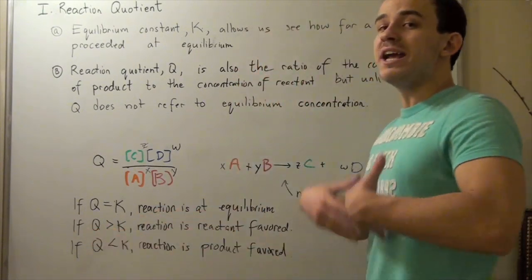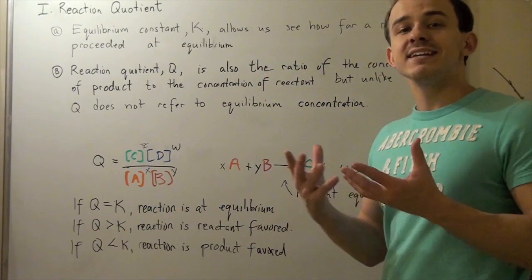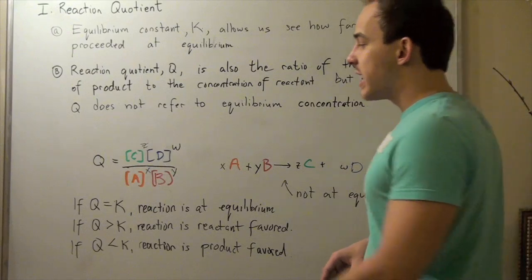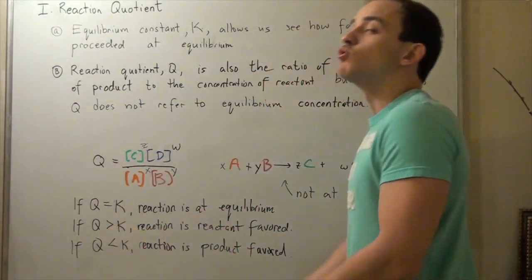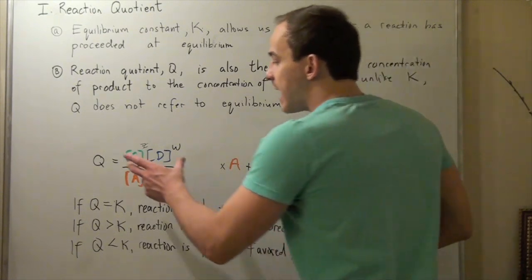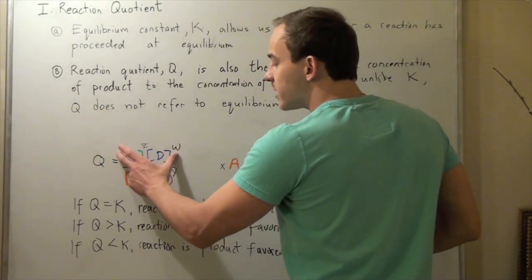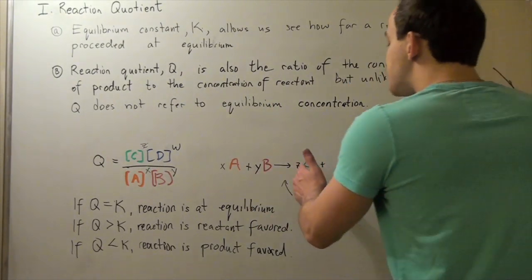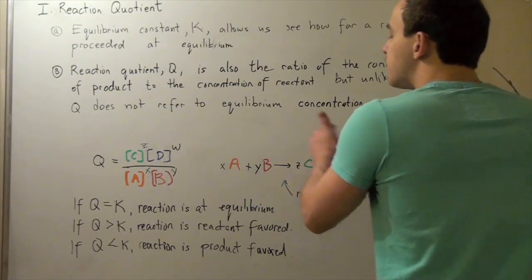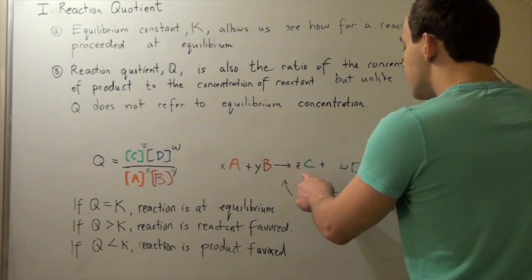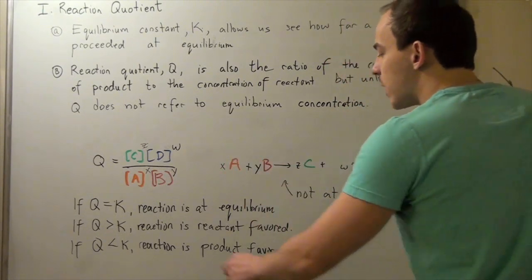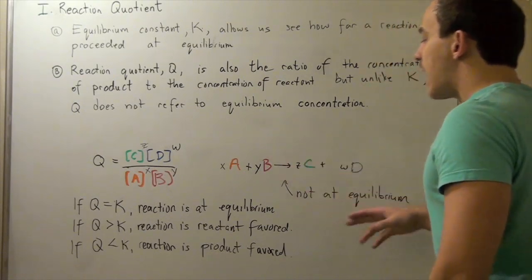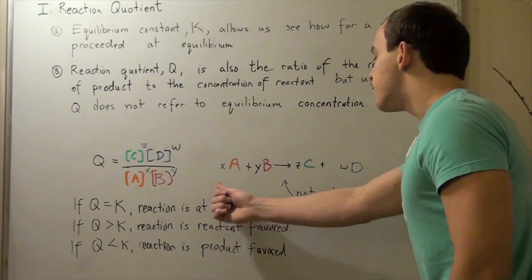Now, if Q is greater than K at the beginning of our reaction, that means our reaction is reactant favored. And that's because, let's look at the ratio. If Q is greater than K, that means the concentration of our products C and D is greater than that at equilibrium. And that means our equilibrium will shift this way. In other words, these products will tend to convert to reactants. And so, our reverse reaction is favored over our forward reaction.